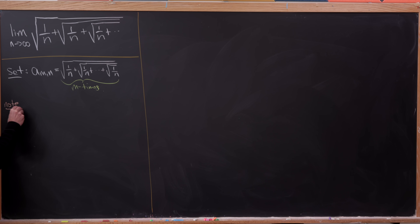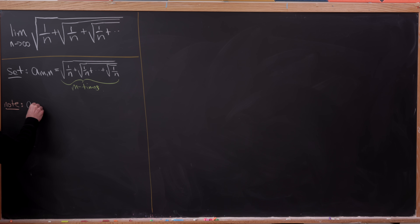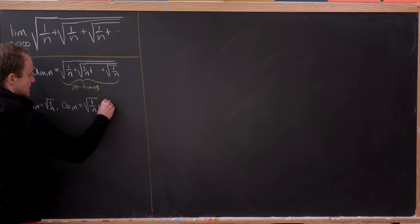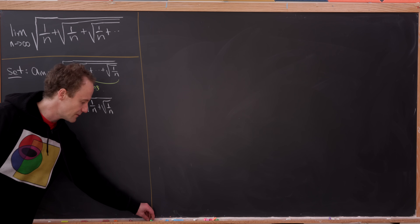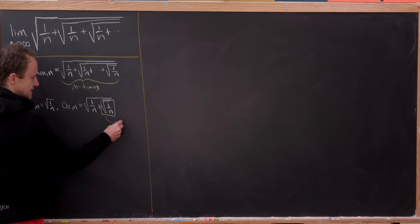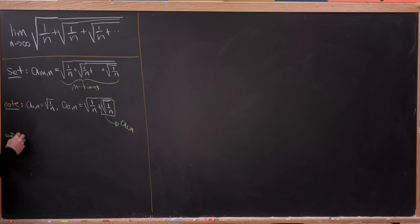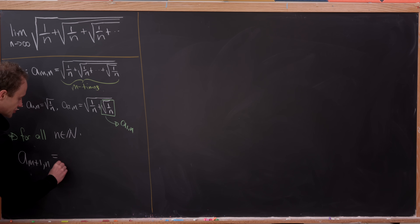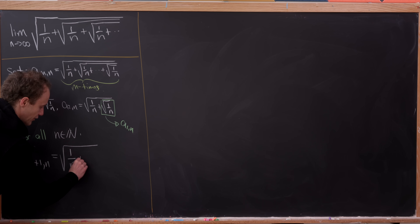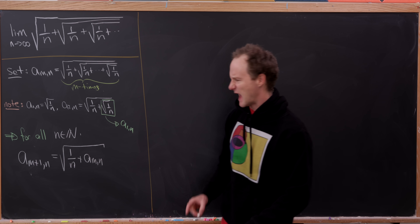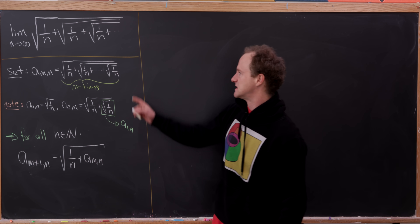To get a feel for things: a_{1,n} is simply the square root of 1/n, and a_{2,n} is the square root of 1/n plus the square root of 1/n. The important observation is that the expression inside the outer square root is just a_{1,n}, giving us the recursion: a_{m+1,n} = √(1/n + a_{m,n}) for all natural numbers n.